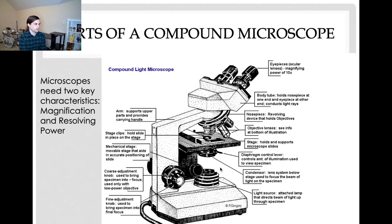The rest of the parts stay pretty much the same between manufacturers. A good microscope needs two things: magnification and resolving power, or resolution. If you have a good microscope, you can do both of those things at the same time.